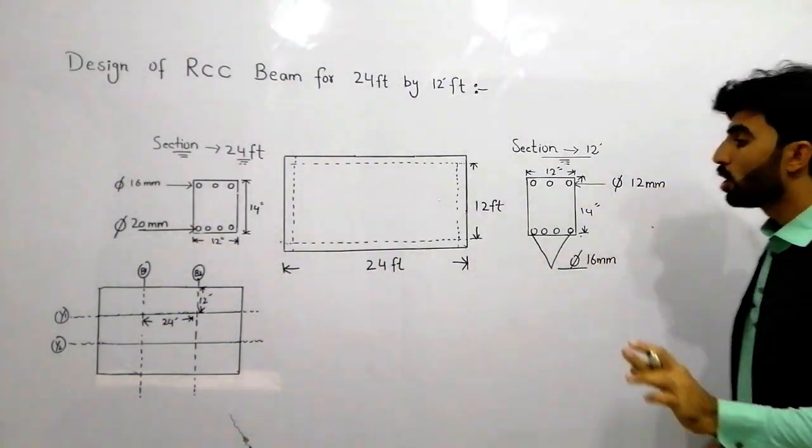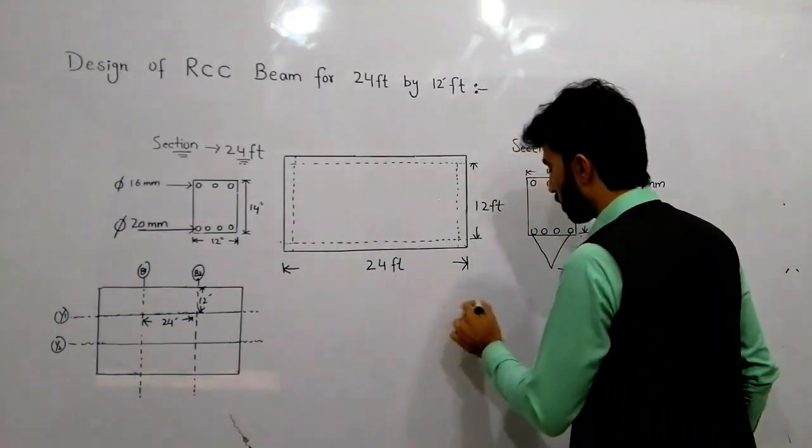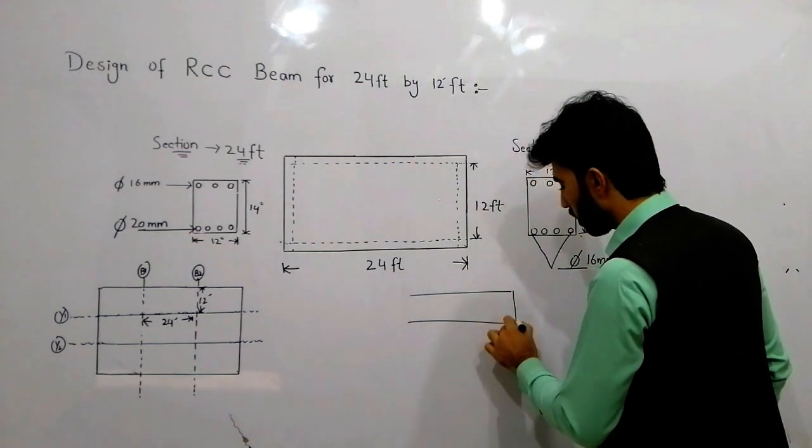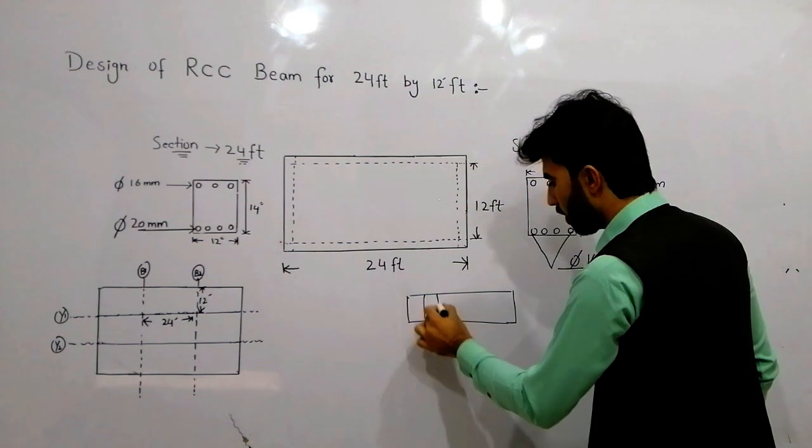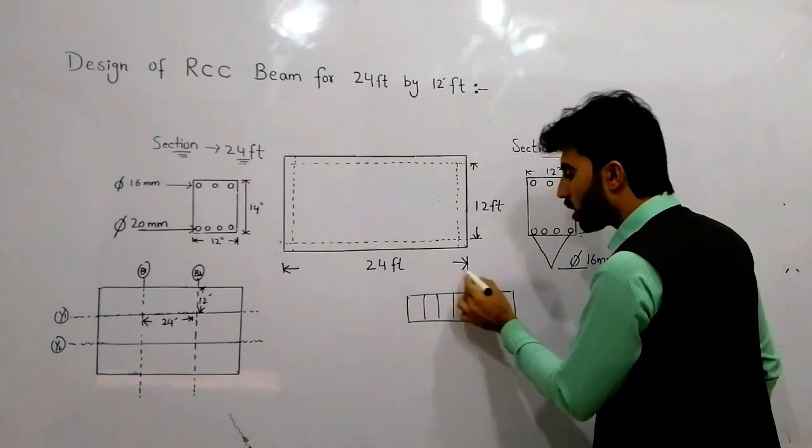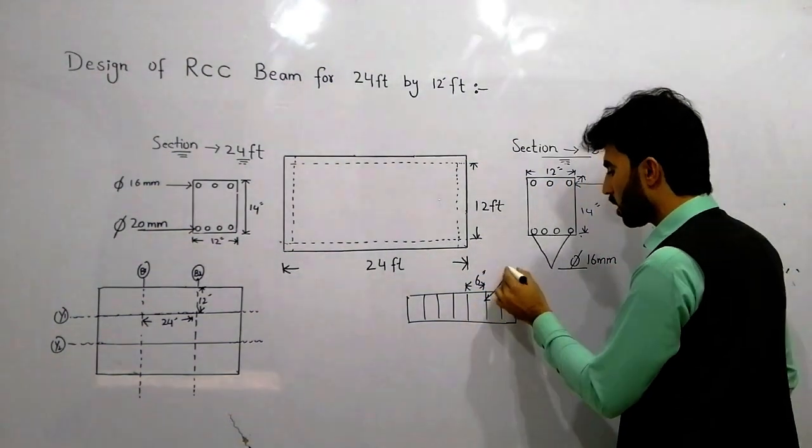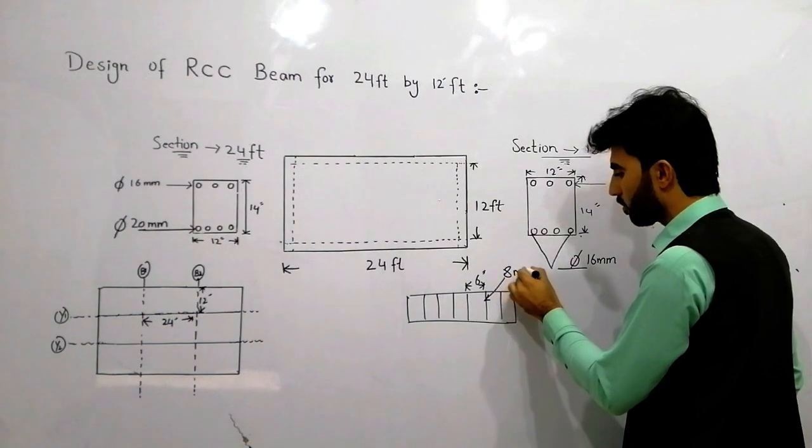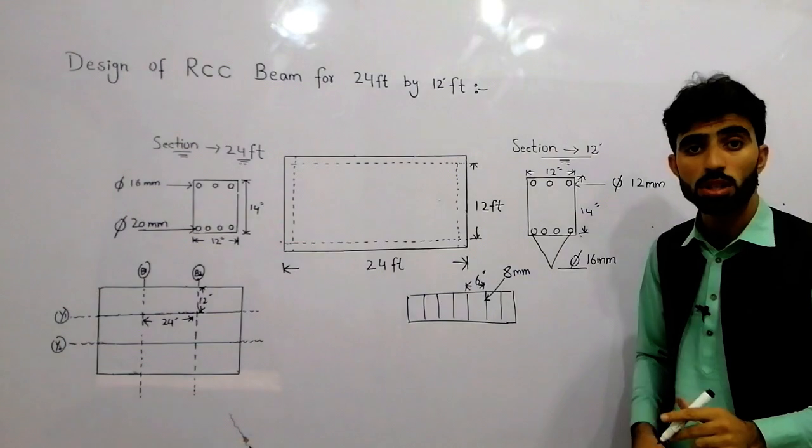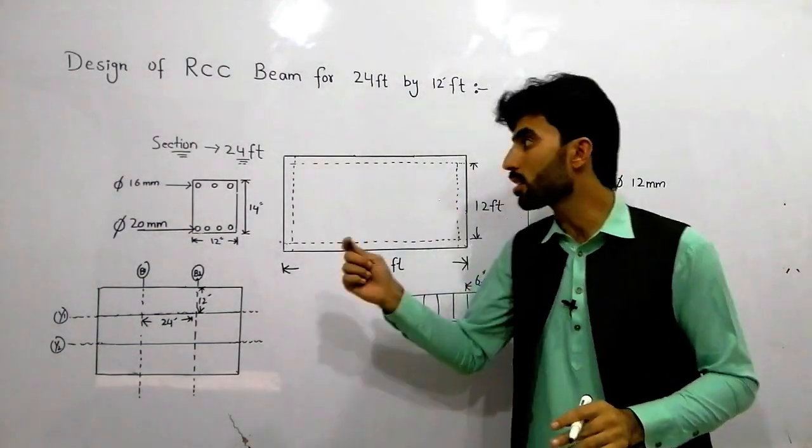But remember, for the stirrup diameter, the spacing was 6 inches and the stirrup diameter was 8 millimeter for both 12 feet and 24 feet. So it was some useful data which I have discussed, it's site data.